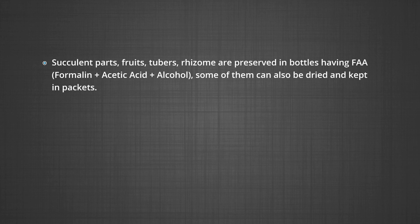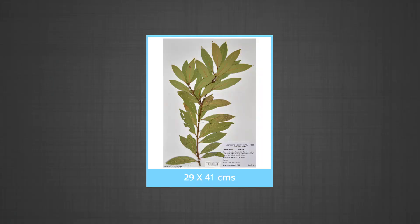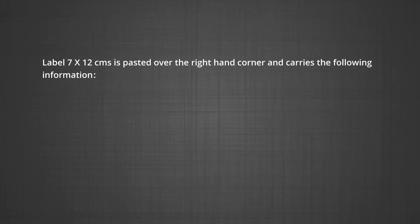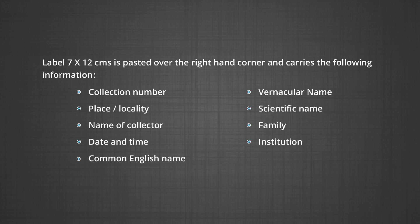The dried specimens are pasted on herbarium sheets; the standard size of a herbarium sheet is 29 by 41 cm. Specimens are kept upside down on paper before fixing; glue or adhesive is applied and they are mounted on the herbarium sheet. All pasted specimens are sprayed with fungicides like 0.1% mercuric chloride, pesticides like DDT, naphthalene and carbon disulfide to prevent fungal growth. Heavy plant parts like seeds and fruits are put in packets and attached to the sheet. A label of 7 by 12 cm is pasted on the right-hand corner carrying the collection number, place of collection, name of collector, date and time, common English name, vernacular name, scientific name, family and institution.